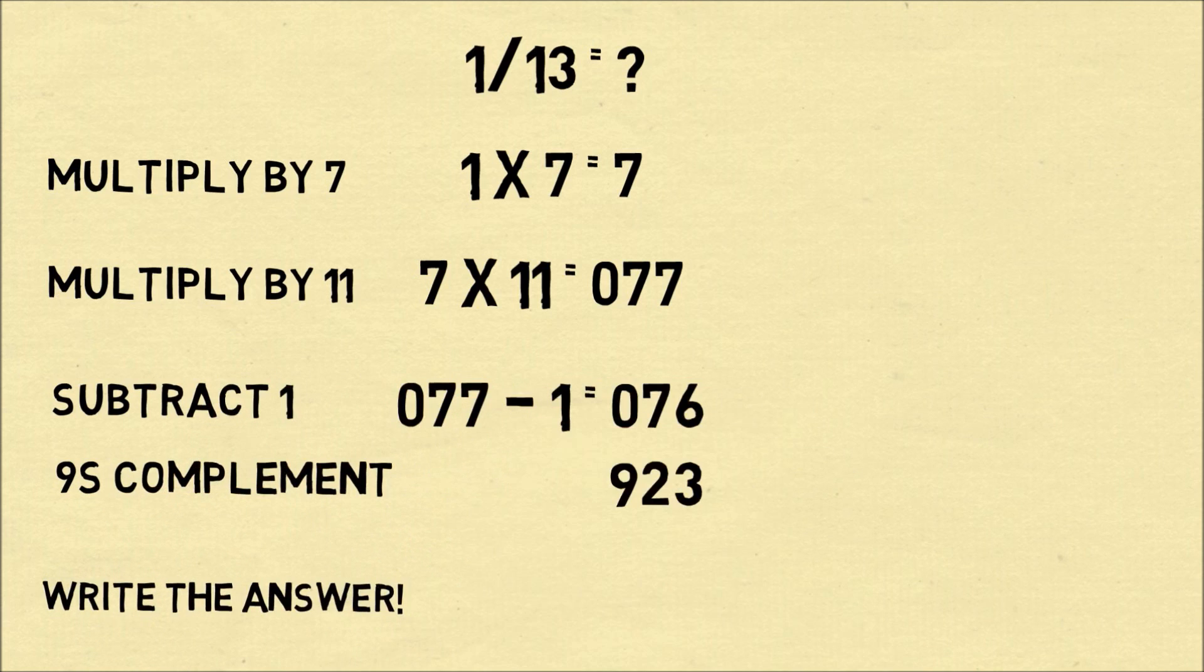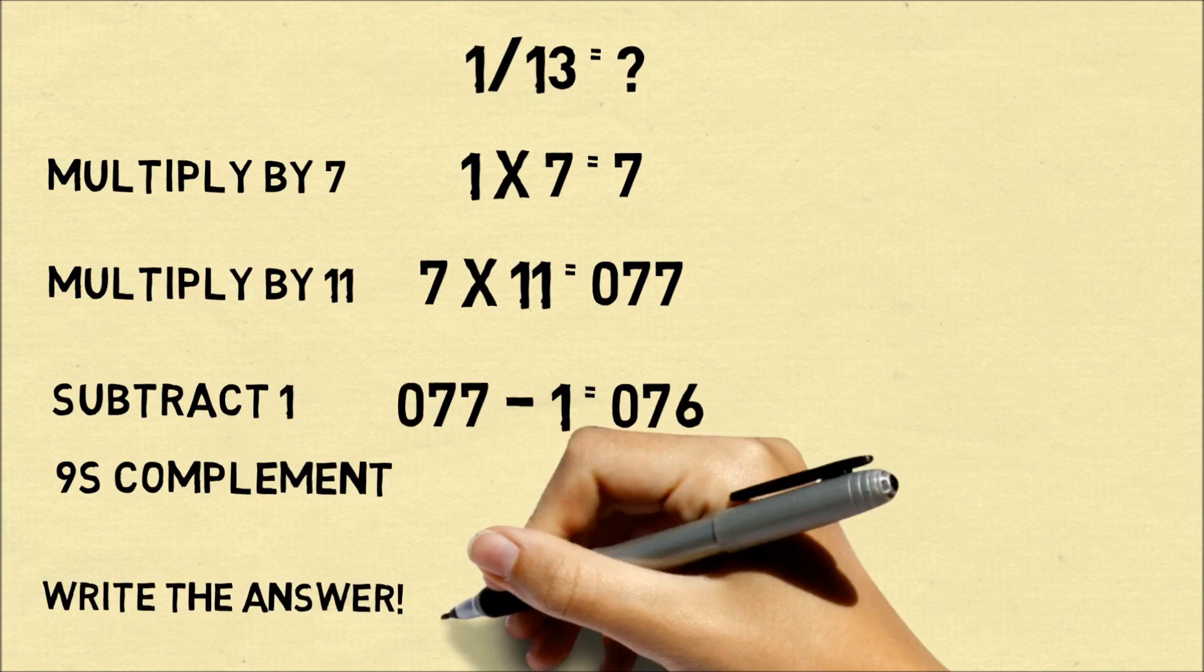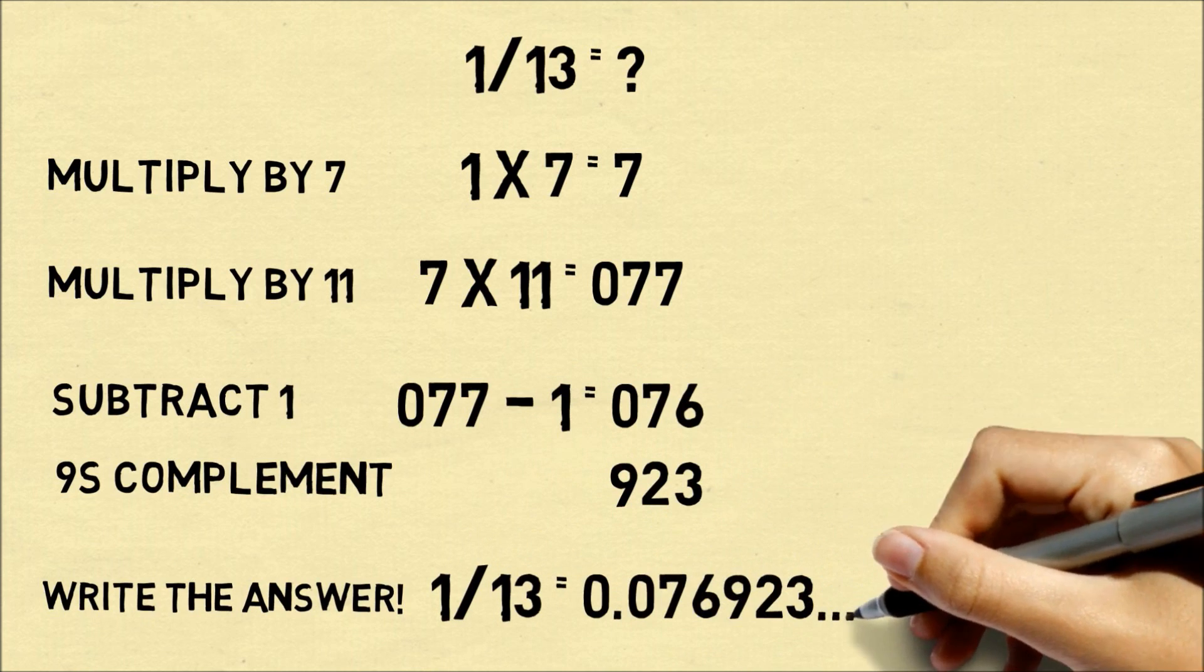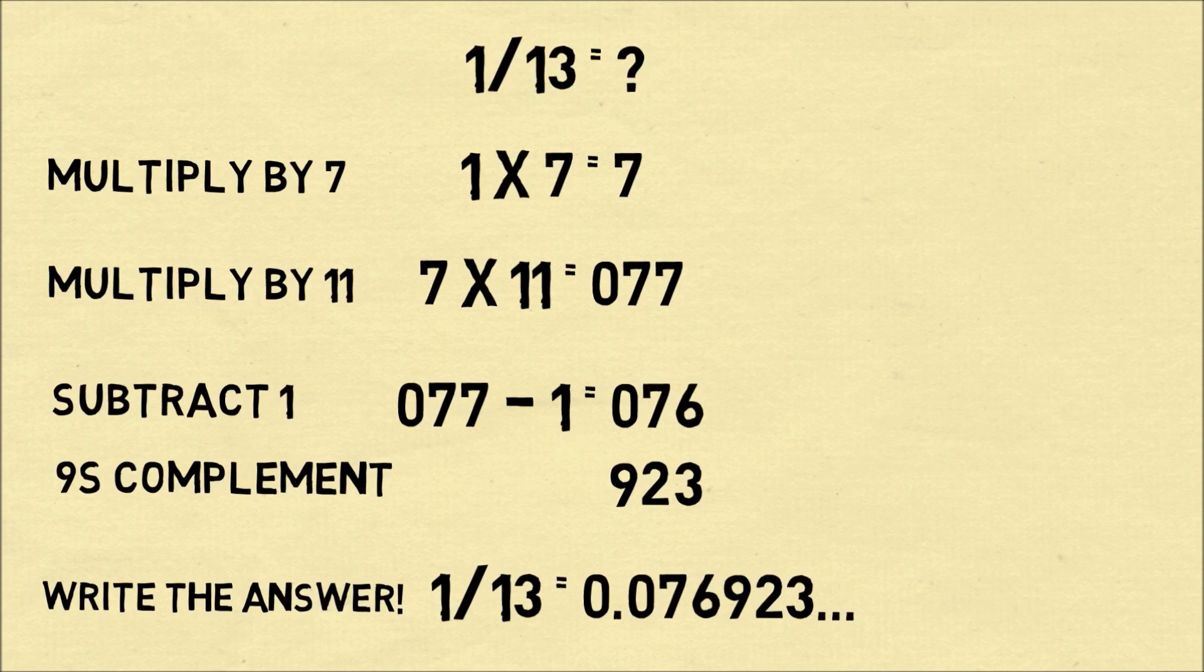So we can write the answer using those digits in order. That 1 divided by 13 is equal to 0.076923 and those six digits keep repeating.